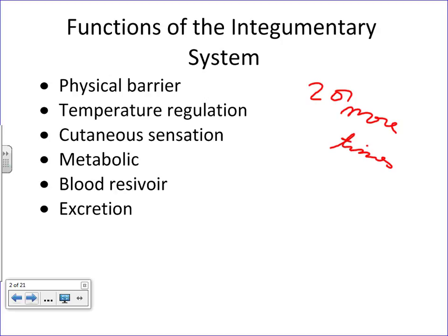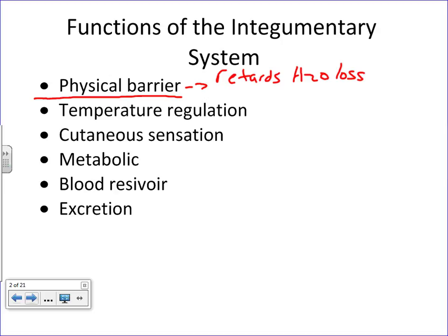Because skin is diverse in its tissue composition, it's also diverse in its functions. The primary function of skin that you need to know is that skin is a physical barrier. First, skin retards — meaning hinders — water loss. We shouldn't say skin prevents water loss, because we sweat to thermoregulate ourselves, which is a controlled water loss. So skin doesn't prevent it, it just hinders it.